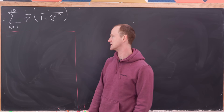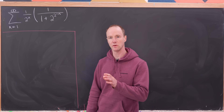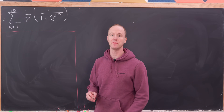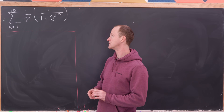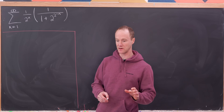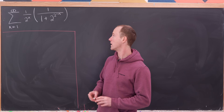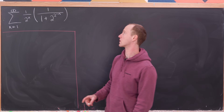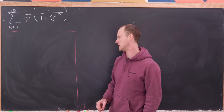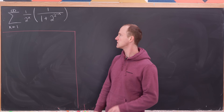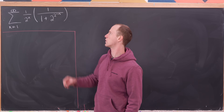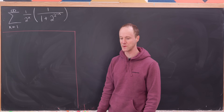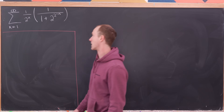Today we've got a nice infinite series. We're going to find the exact value of the sum as n goes from 1 to infinity of 1 over 2 to the n times 1 over 1 plus 2 to the power 2 to the minus n. Let's get started by looking at this 1 over 1 plus 2 to that power and see if we can simplify it.